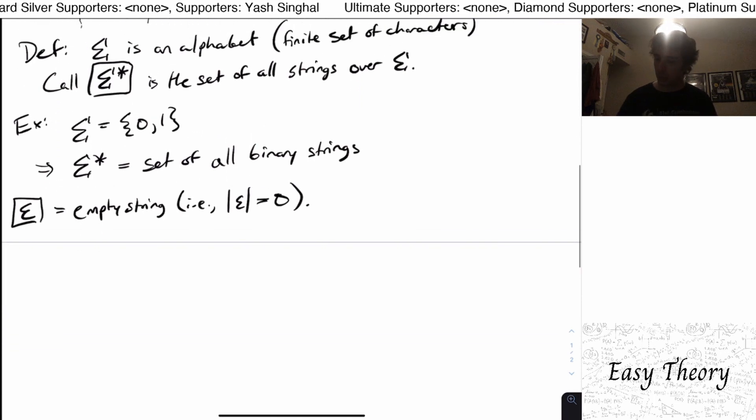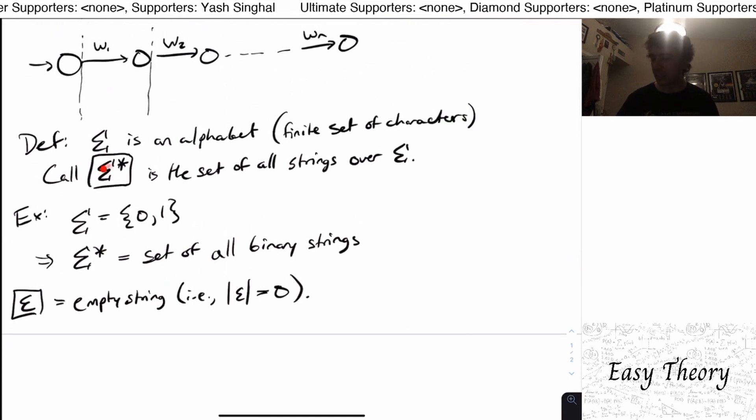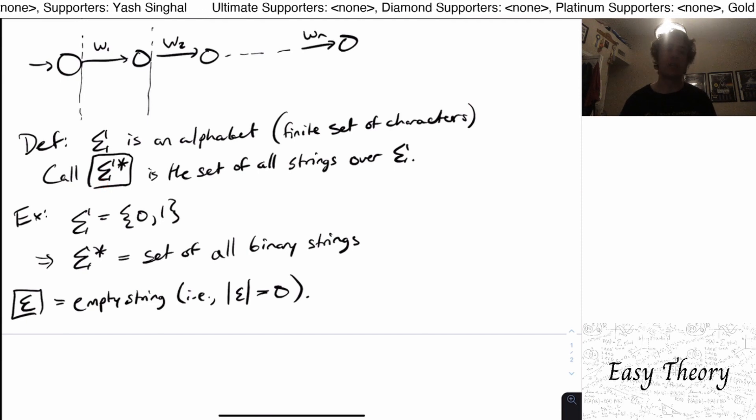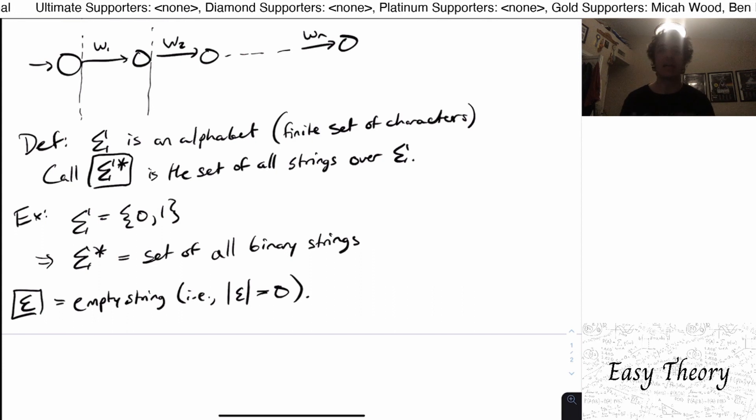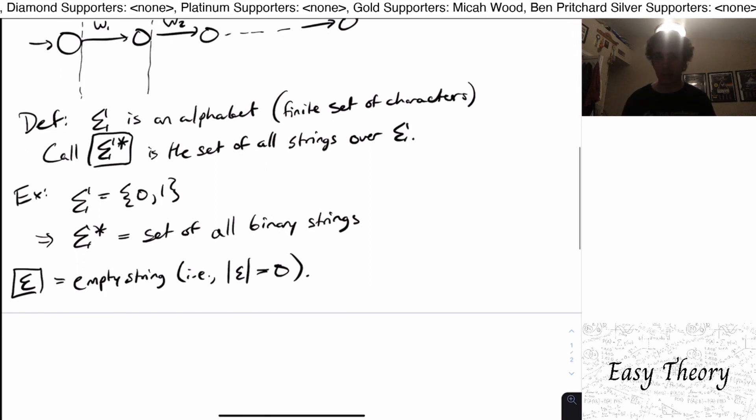Okay, so but if I have like say sigma to be {0, 1, 2}, those are all the ternary strings, base three strings. If I have sigma being a, b, c all the way through z, then sigma star would be all the possible words that you can make with the English alphabet.